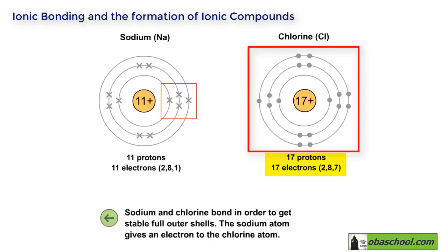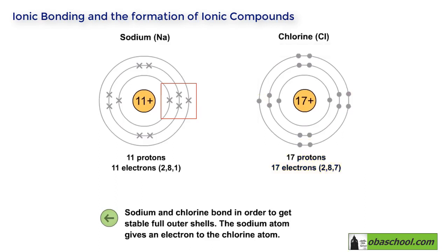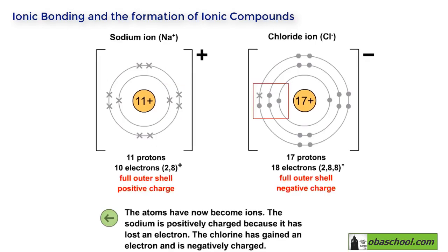Chlorine's electron configuration is 2,8,7, so it has seven electrons in its outermost shell. Sodium and chlorine bond in order to get stable, full outer shells. The sodium atom gives an electron to the chlorine atom — this transfer of electrons forms a sodium ion and a chloride ion.